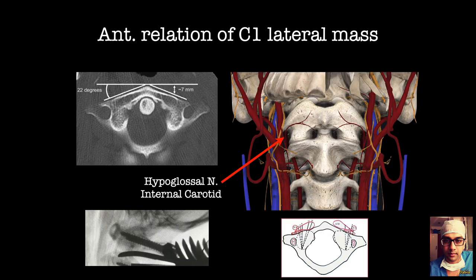The anterior relationship of the C1 lateral mass is important. The anterior part of the C1 lateral mass is posterior to the anteriormost part of the anterior tubercle by about 7 millimeters. When placing a screw, stop short of the anterior arch, because going all the way anteriorly will place the screw near the internal carotid and hypoglossal nerve. The lateral mass screw direction should be slightly medial, especially as this screw is stronger with bicortical purchase.